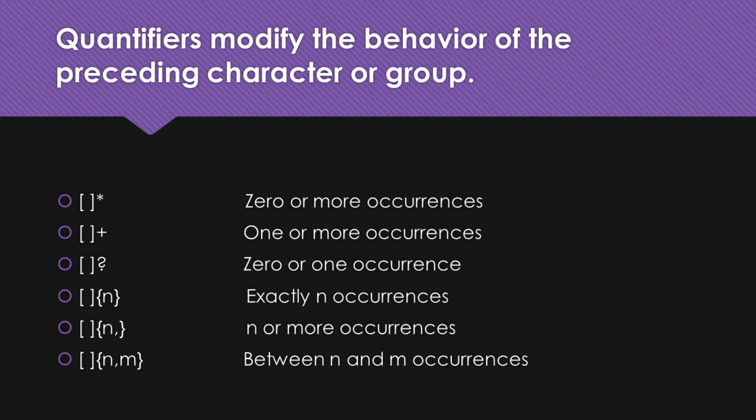Moving on, we have the curly braces. They allow us to specify an exact number of occurrences. For example, {n} represents exactly n occurrences of the preceding item. But what if we want n occurrences or more? That's where {n,} comes into play — the comma after n means we want n or more occurrences. Finally, {n,m} allows us to specify a range of occurrences between n and m, useful when we want matches that fall within a certain range.